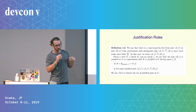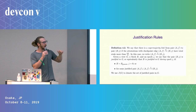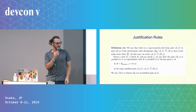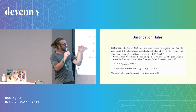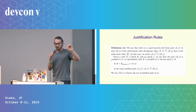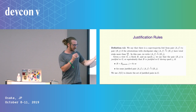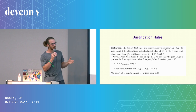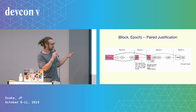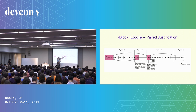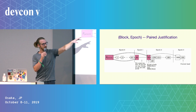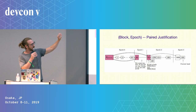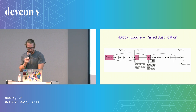Justification rules: similarly to Casper FFG, the genesis block at epoch zero is justified. Subsequently we have these block-epoch pairs — any justification pair from a source of a prior justification pair is justified. When votes are cast, we're always specifying a source and a target. In this link that was created, this prior justification was the source and this new one is the target. We create a justified link — called a super majority link — to create this chain of justified blocks, and a subset of them, depending on the rules, can be finalized.